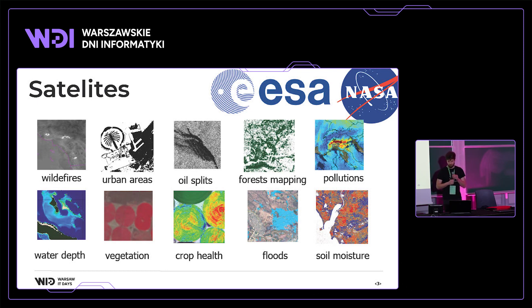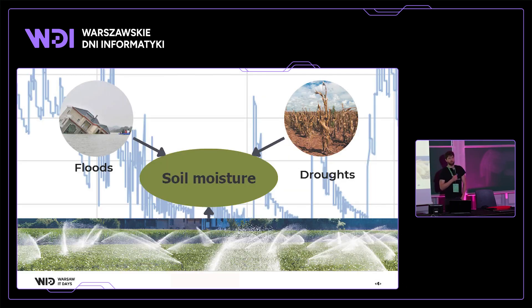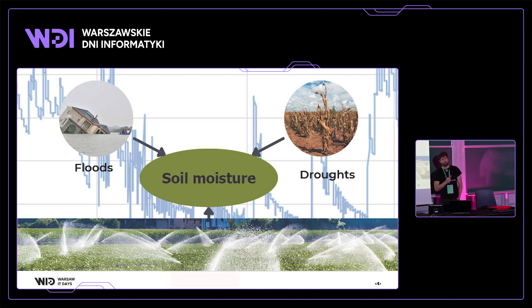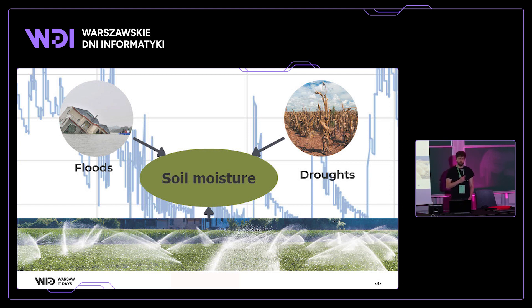What we can do with satellites and water monitoring: first, we can detect floods — the size, the depth — and in more advanced cases we can anticipate the future, predict the flood, and act accordingly.